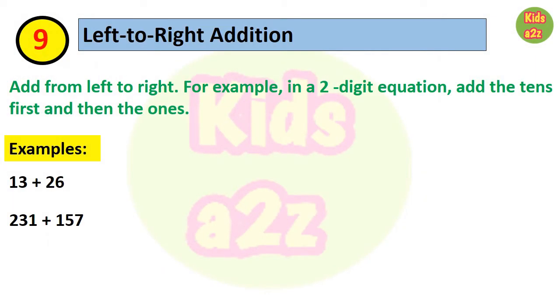Next strategy is left to right addition. That means in a 2-digit equation, we need to add the tens first and then the ones. To add 13 plus 26, we need to first add 1 ten plus 2 tens, and then 3 ones with 6 ones. So 10 plus 20 equals 30, and 3 plus 6 equals 9. Now we need to add 30 plus 9, that is 39. Similarly, we can apply this strategy for bigger numbers. Like to add 231 plus 157, we need to start with the hundreds place first, then tens, and at last, ones.